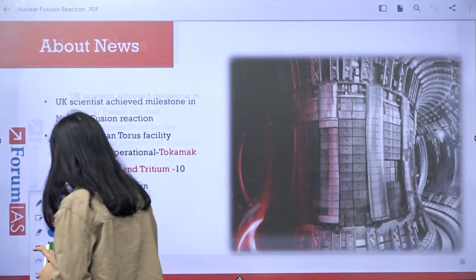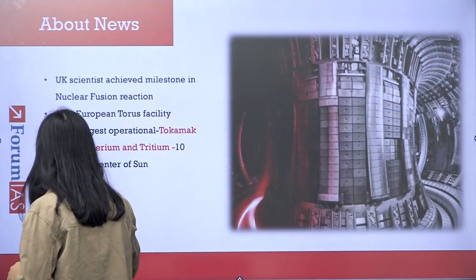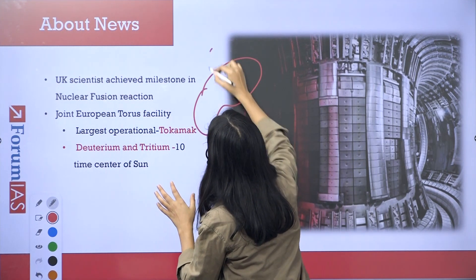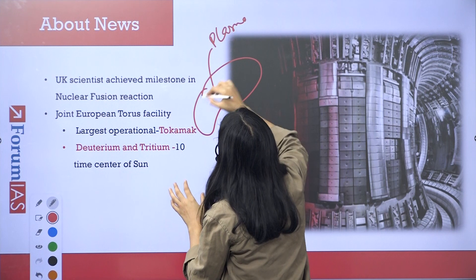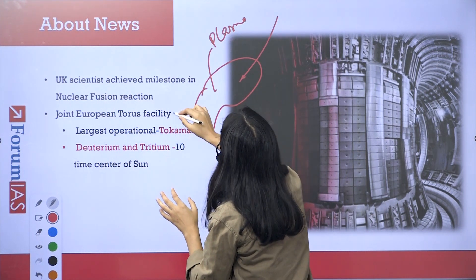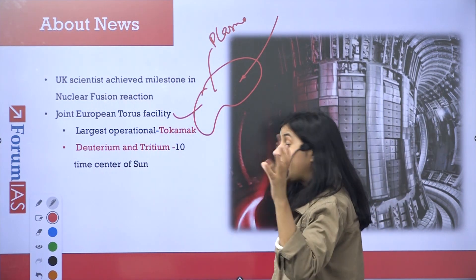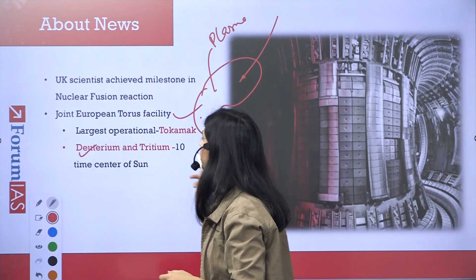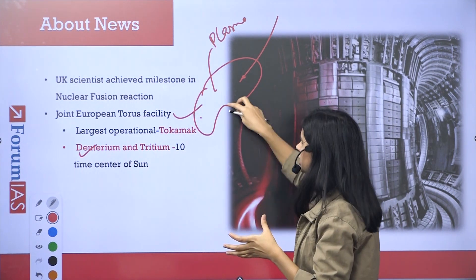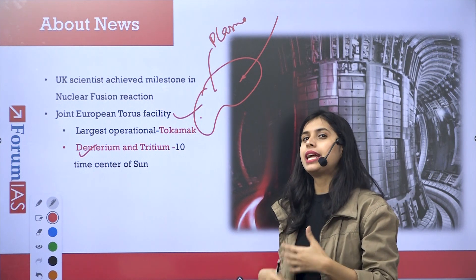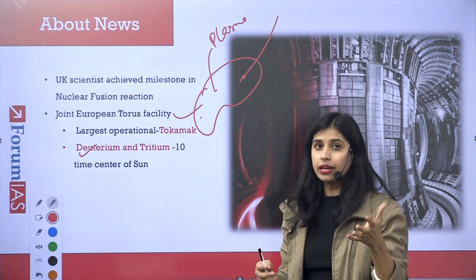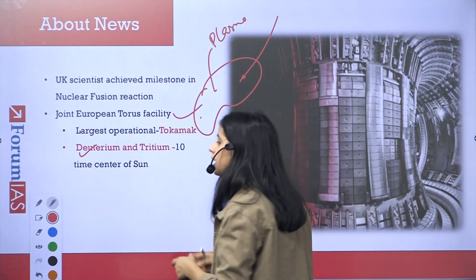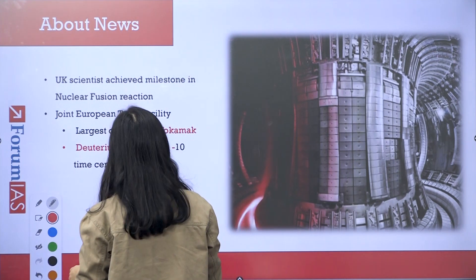Tokamak is a kind of donut shaped machine in which the plasma is present and this plasma is confined in there with the help of magnetic field so this plasma does not run away anywhere. Then enough energy is provided to this so that nuclear fusion reaction can take place. Here deuterium and tritium are actually placed in this plasma and they are heated to 10 times the temperature that is present in the sun in order to produce the nuclear fusion reaction.